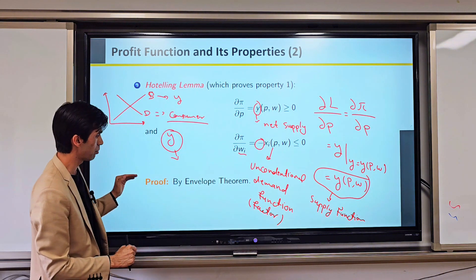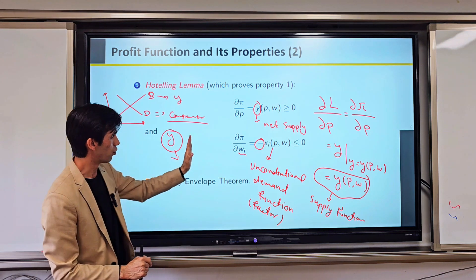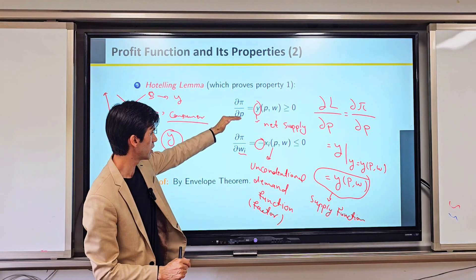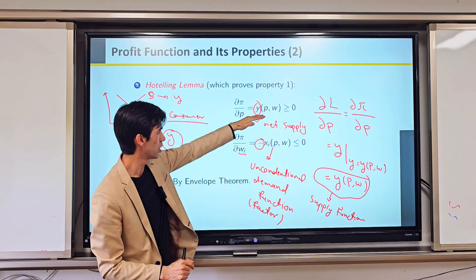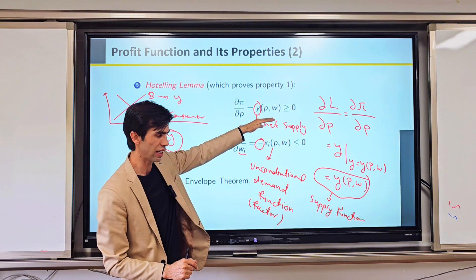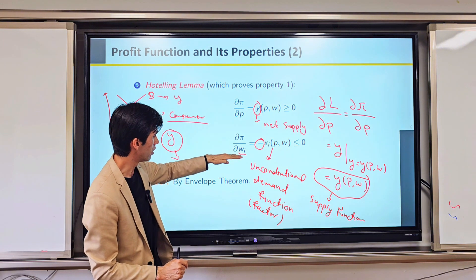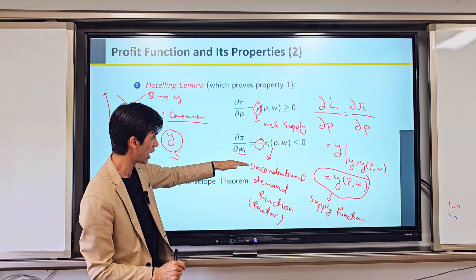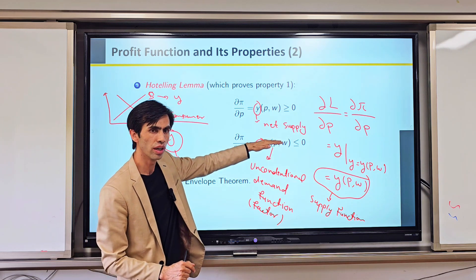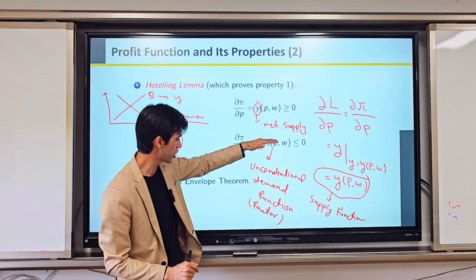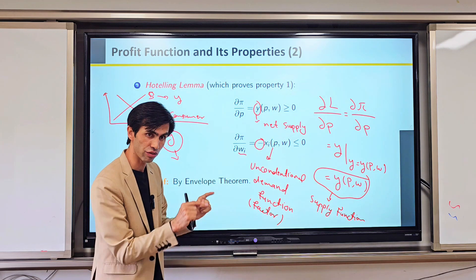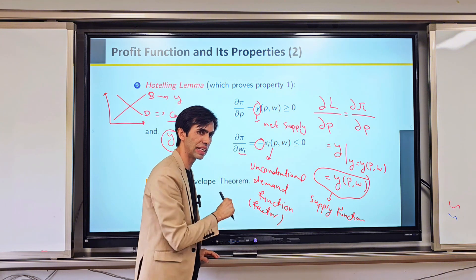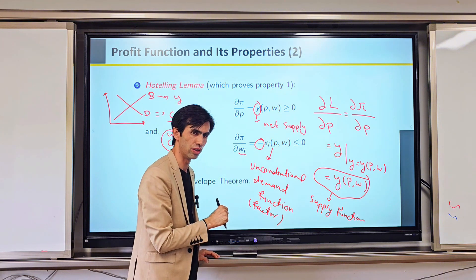So by the envelope theorem: when we take the partial derivative of profit with respect to price, it leads to the supply function; and when we take the partial derivative of profit with respect to input price, it leads us to the unconditional demand function for our factor or input — but with some negative value.